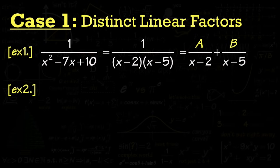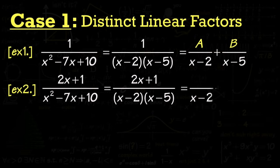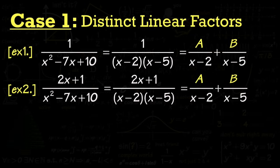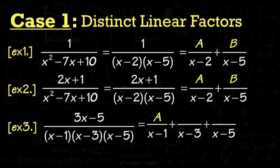To find A and B, you can use the cover-up method, demonstrated in another video. Example two has the same denominator but the numerator is 2x + 1. Since the degree on top is still less than the degree on bottom, we get the same setup: A over (x minus 2) plus B over (x minus 5). The A and B values will differ, but the setup is identical. With three factors, we simply add a third term — C over (x minus 5) — and the cover-up method works great here too.